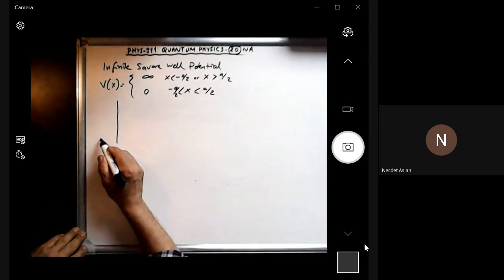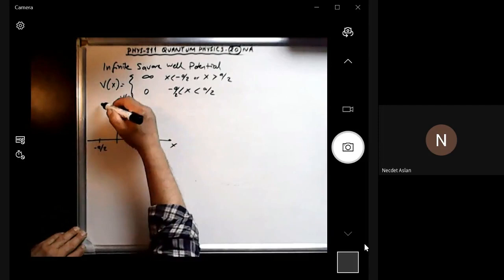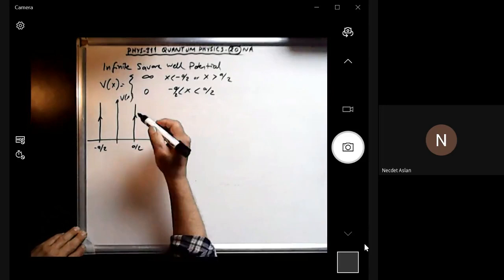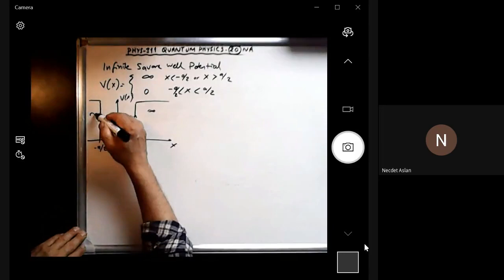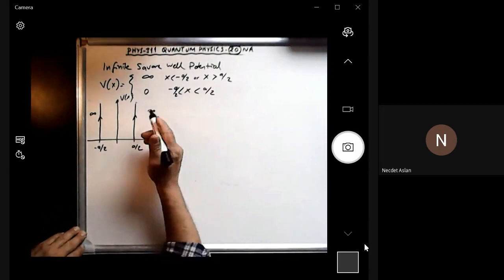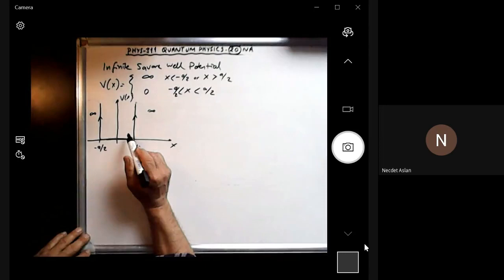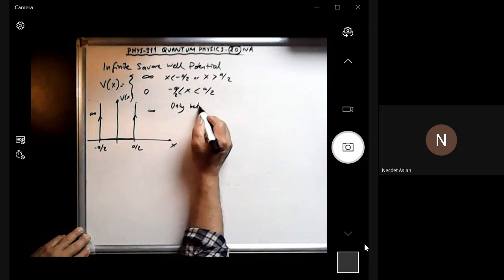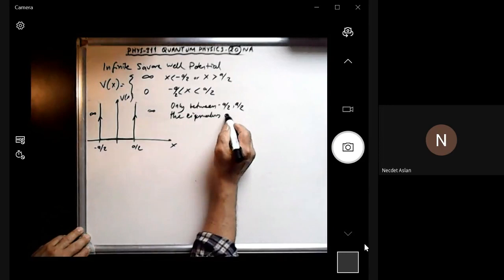We can show this as a graph. On the x-axis we have the position, with minus a/2 and a/2 marked. We have an infinitely large potential on both sides — continuous and infinite — and the potential is zero inside, creating a well. Only between minus a/2 and a/2 are eigenvalues possible.